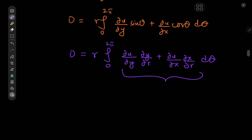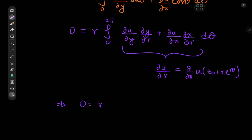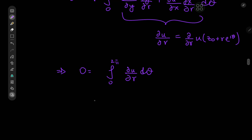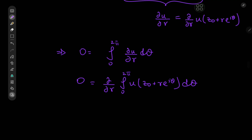Making use of these relations, we have 0 equal to r times the integral from 0 to 2pi of partial u by partial y times partial y by partial r, plus partial u by partial x times partial x by partial r, d-theta. This is just an application of the chain rule — we have the partial derivative of u with respect to r. Here u is a function of z-naught plus r times e to the i-theta. So we have 0 equal to r times the integral from 0 to 2pi of partial u by partial r d-theta, and since r is non-zero we get the integral from 0 to 2pi of partial u by partial r d-theta equals 0. Switching the order of integration and differentiation gives the partial derivative with respect to r of the integral from 0 to 2pi of u of z-naught plus r times e to the i-theta equals 0.